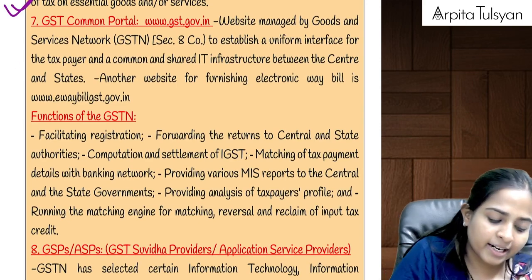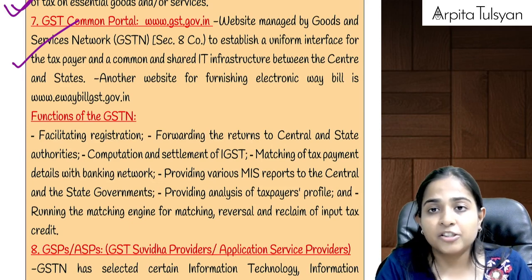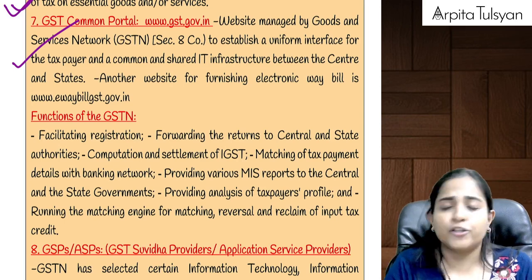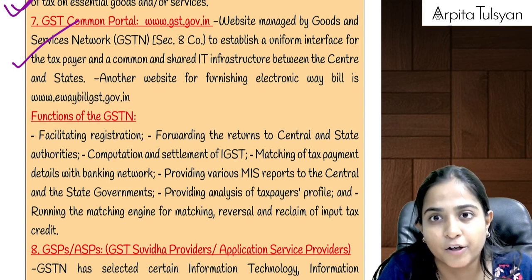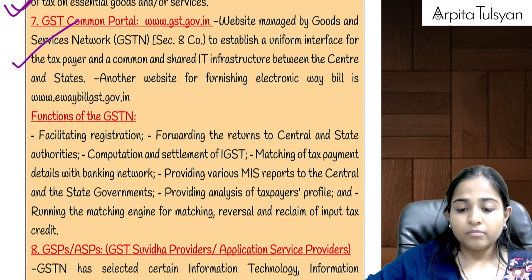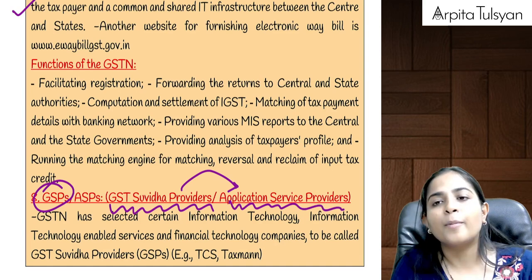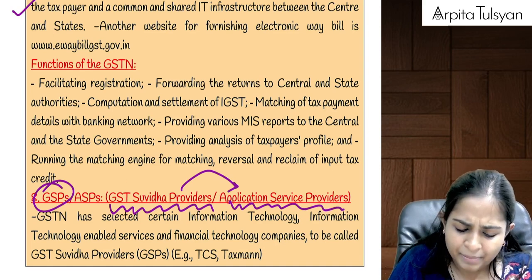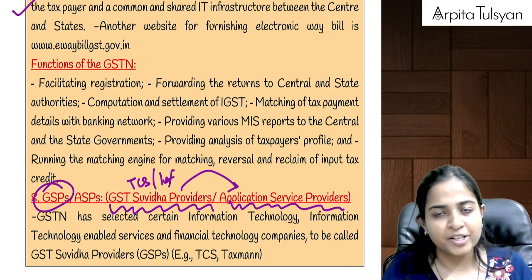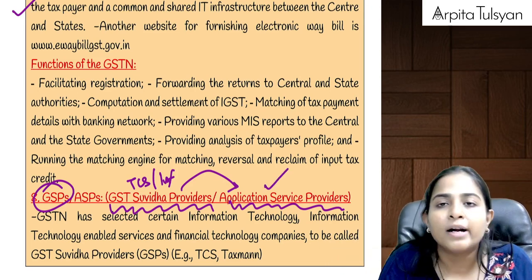When this big reform was done under GST, the plan was that everything should be transparent and online. For that purpose, they made a website — the GST Common Portal — that is gst.gov.in. This website will be maintained by GSTN, GST Network, which is a Section 8 company formed under the Companies Act. GSTN will take help from GSPs — GST Suvidha Providers — and GST Suvidha Providers can take help from Application Service Providers. GST Suvidha Providers can be IT companies like TCS, Infosys, etc.